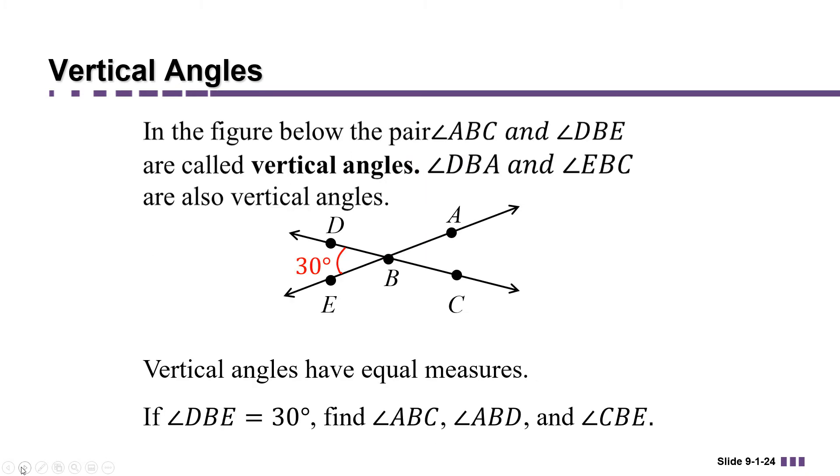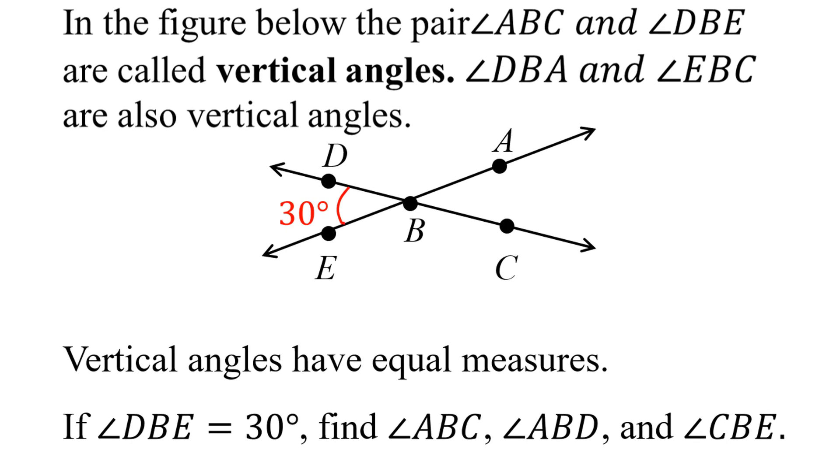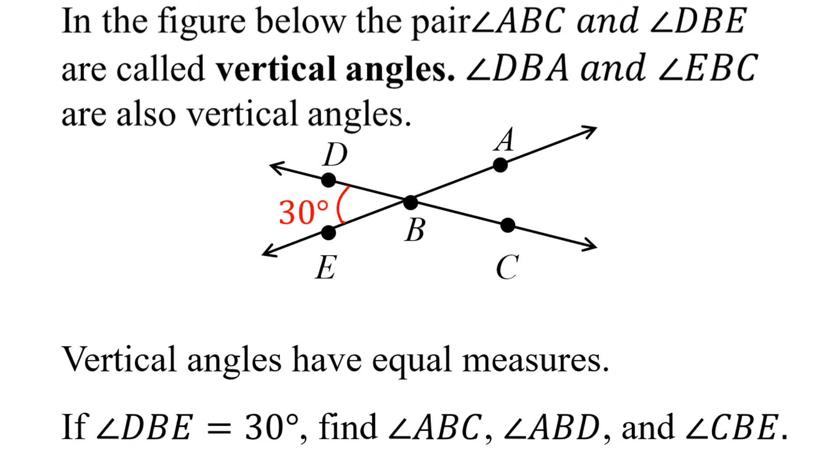Now let's suppose that in that same diagram, we were told that angle DBE is equal to 30 degrees. Using the fact that vertical angles have equal measures, combined with other knowledge we have about angles, let's find angles ABC, ABD, and CBE.